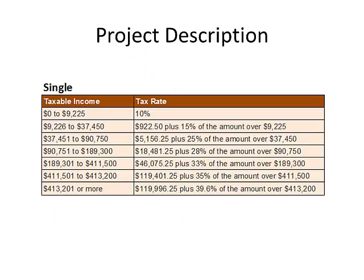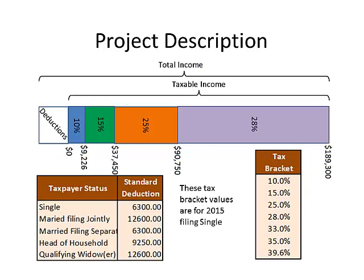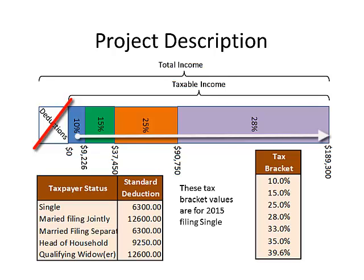Here's a tax table for someone who is single. It shows the amount of taxable income that moves a person from one tax bracket to another. Starting at 10%, we have from $0 to $9,225 taxed at 10%. Then from $9,226 to $37,470 you get taxed at 15% of anything over $9,225. A diagram shows that for a single taxpayer, deductions and exemptions are taken off first, then brackets go 10%, 15%, 25%, 28%, and higher.